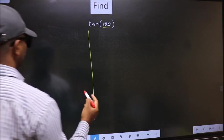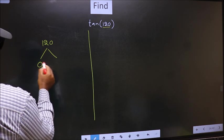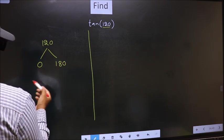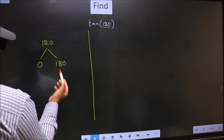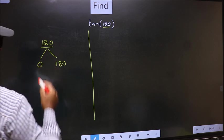What I mean is 120 lies between 0 and 180. This is 180 into 0 and this is 180 into 1. Between these two numbers, 120 lies.